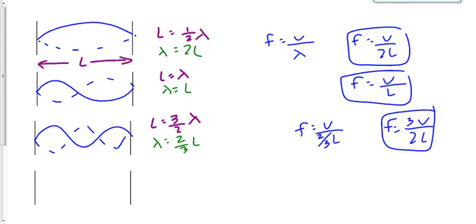We noticed a pattern. This is called the fundamental frequency, or the first harmonic. The second harmonic has a value of twice the first harmonic. The third harmonic has a value of three times the first harmonic, and so on. We saw this with our own eyes, and now we can predict what frequency these standing waves will occur at.